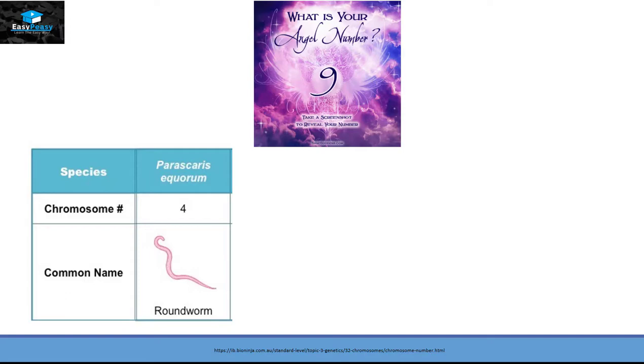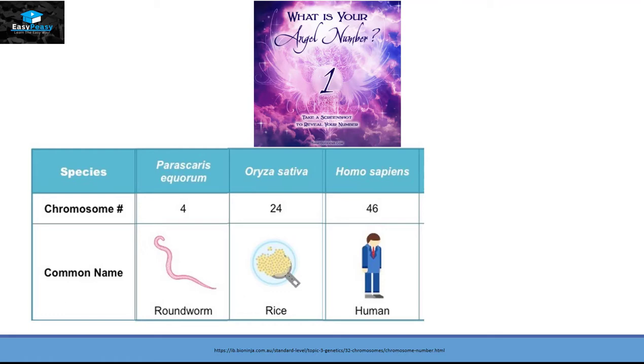As we know, all organisms are made up of chromosomes and every organism has a specific number of chromosomes. For example, roundworm has four chromosomes, rice has 24.